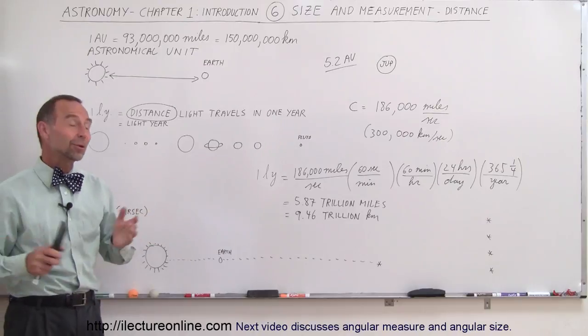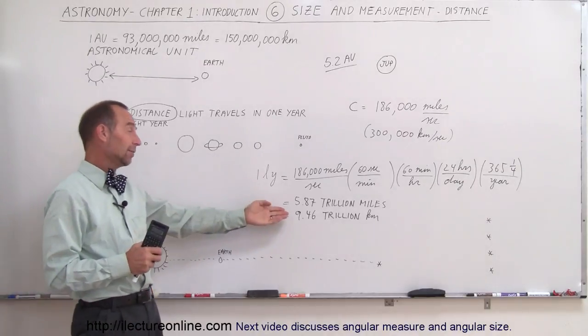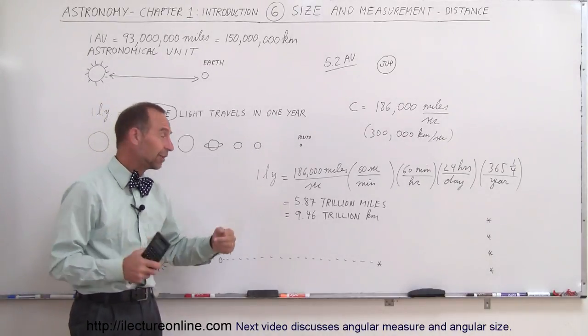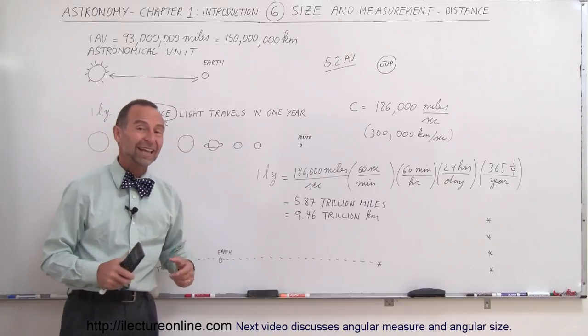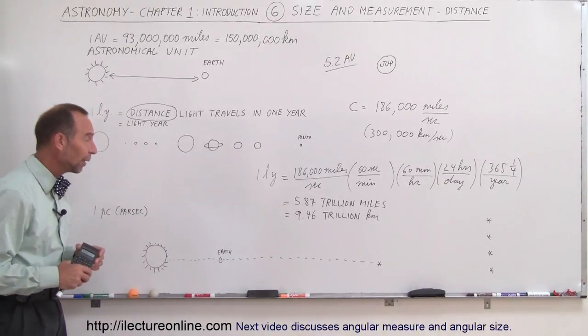I think you have a pretty good idea. If you want to round it off, it's six trillion miles, roughly, for a light year, or almost 10 trillion kilometers. That's probably an easy way to remember it.